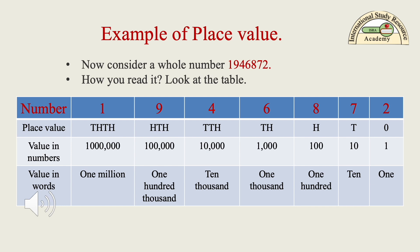Look at the table. The number is written in the first row, symbols are written in the second row, place values in numbers are written in the third row, and place values in words are written in the fourth row.